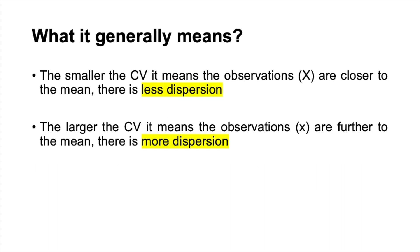If we calculate the coefficient of variation and the value is small, it means that the observations are closer to the mean and there is less dispersion among the observations. If the CV is large, it means that the observations are further from the mean and there is more dispersion.